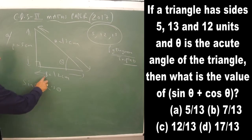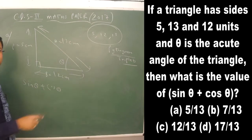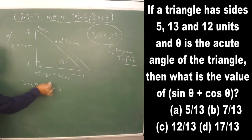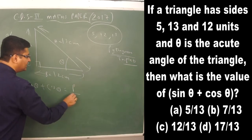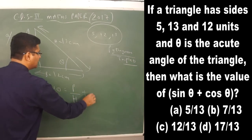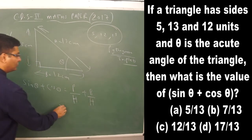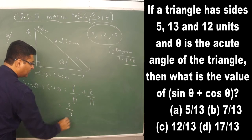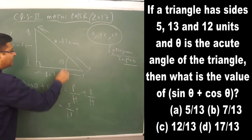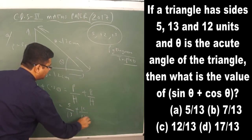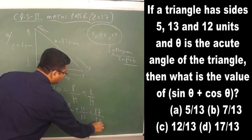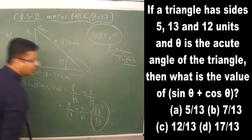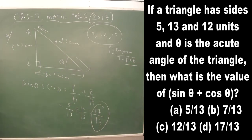Perpendicular P = 5 cm, base B = 12 cm, and hypotenuse H = 13 cm. Since sin θ = P/H and cos θ = B/H, we get sin θ + cos θ = 5/13 + 12/13 = 17/13, which matches one of the options.